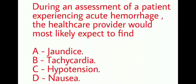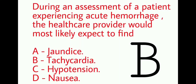Next, during an assessment of a patient experiencing acute hemorrhage, the healthcare provider would most likely expect to find — options are: jaundice, tachycardia, hypotension, nausea. The right option is option B: tachycardia.